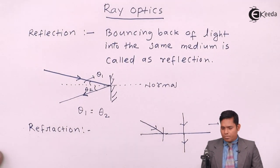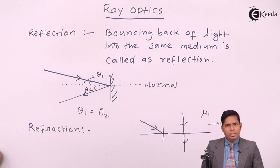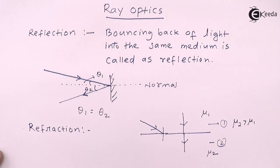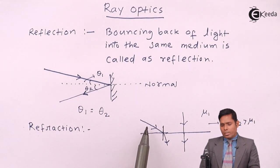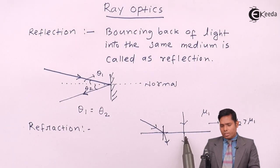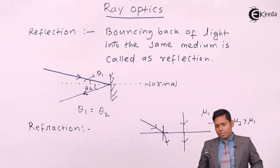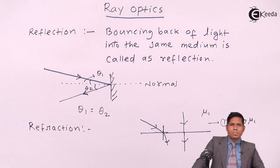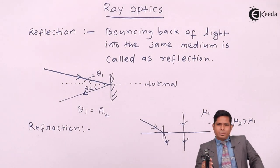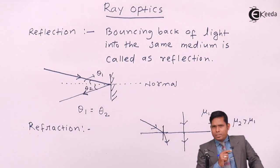In the case of oblique incidence, if the refractive index of medium two (mu two) is greater than the refractive index of medium one (mu one), medium two is optically denser, so the ray will bend towards the normal. There is a change in direction of the ray of light when it enters from one medium to another. In normal incidence there is no change in direction, so we cannot define refraction purely on the basis of change in direction. Normally we say that whenever light travels from one medium to another there is a change in direction and this phenomenon is called refraction, but sometimes the direction might not change.